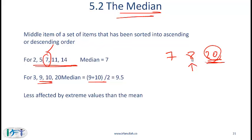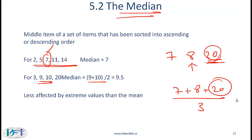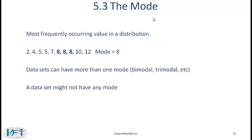The outlier 20 will, however, have a major impact on the mean: 7 plus 8 plus 20 divided by 3 gives a much higher average. The mode is simply the most frequently occurring value in a distribution. In the example set, the mode is 8. Datasets can have more than one mode — bimodal if there are two modes, trimodal if three — and it is also possible that a dataset has no mode.